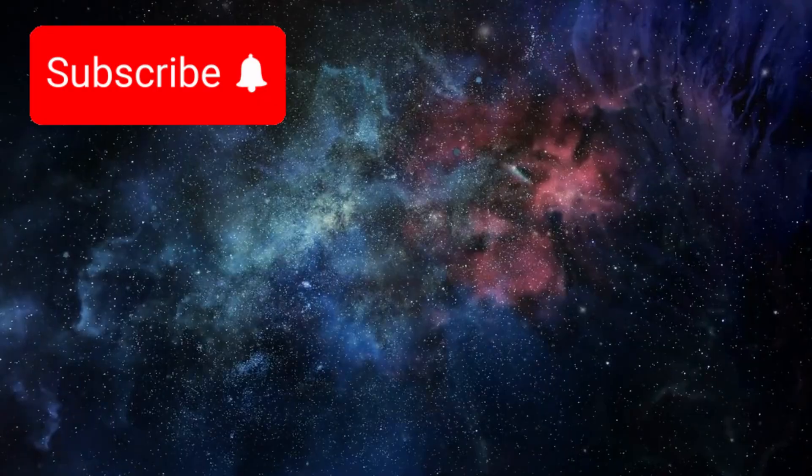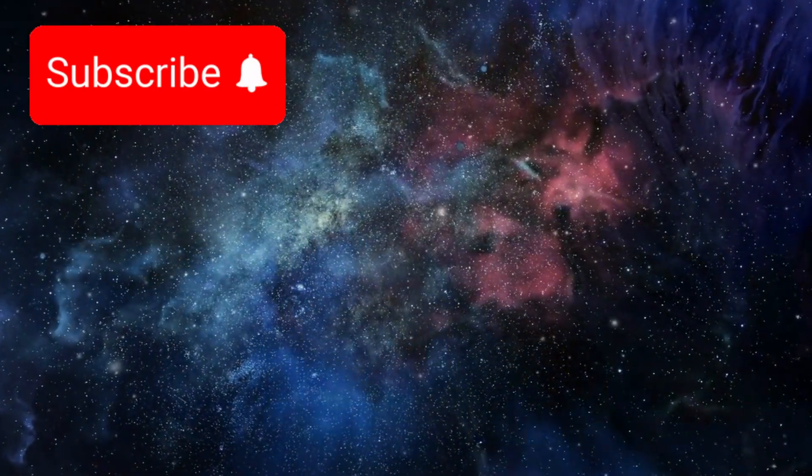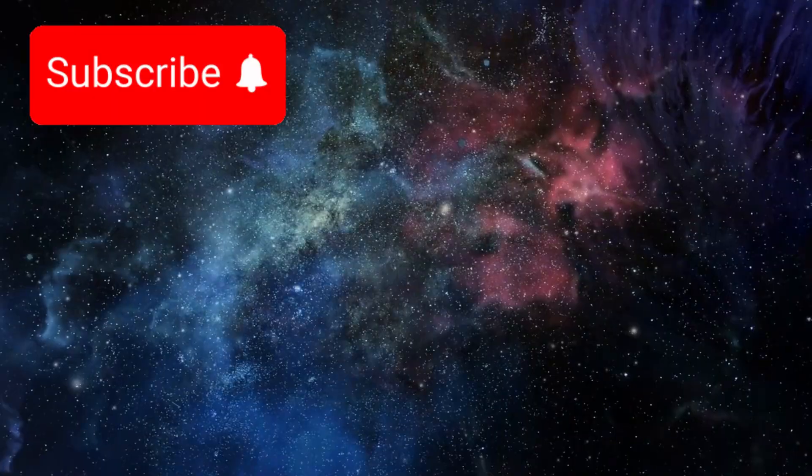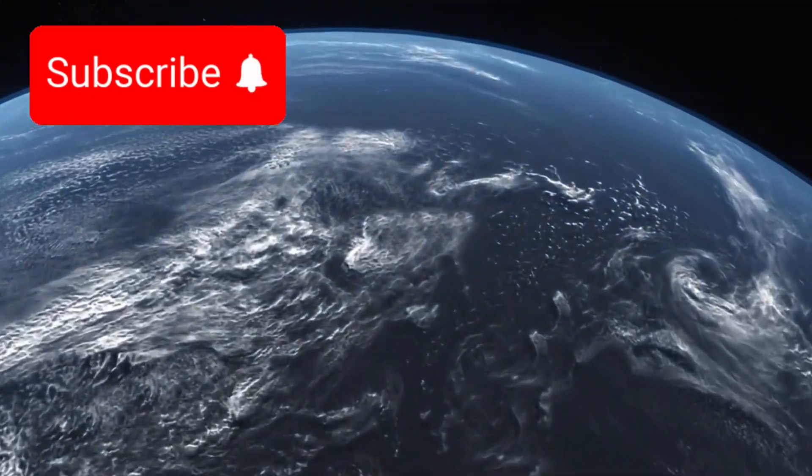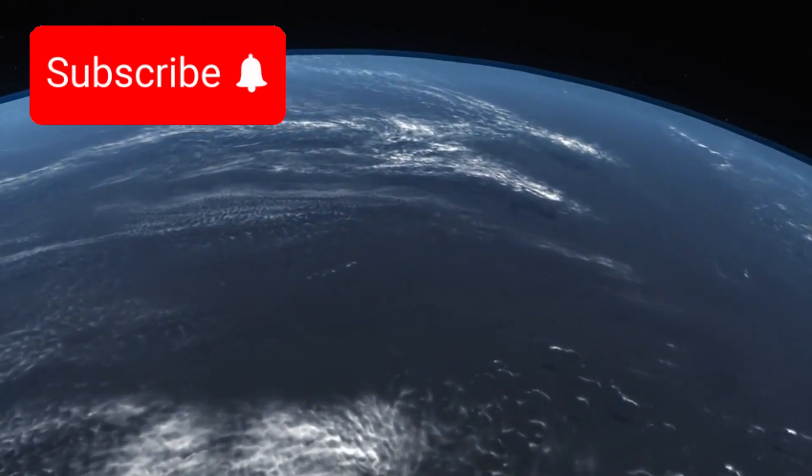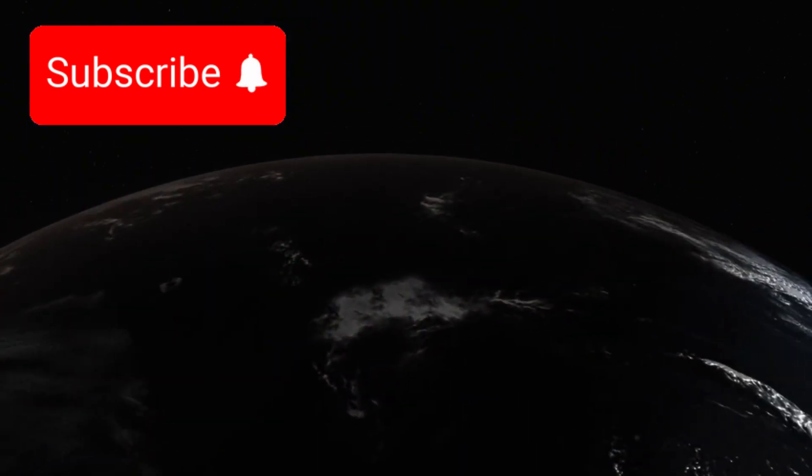This planet orbits a faint red star in the constellation Leo, 124 light-years from Earth. A distance nearly 700 trillion miles away. It is larger than Earth, about 2.6 times wider, and surrounded by a thick hydrogen-rich atmosphere that may cloak an ocean world.